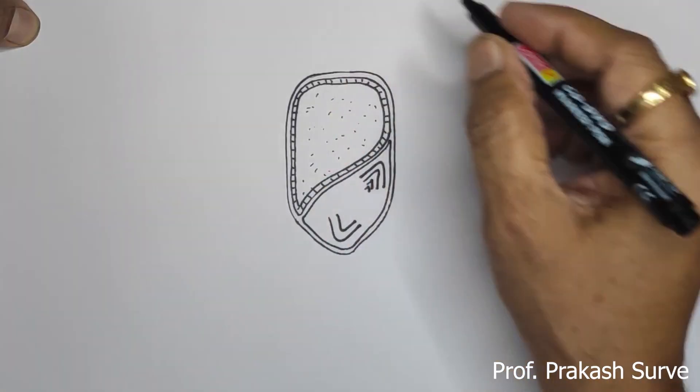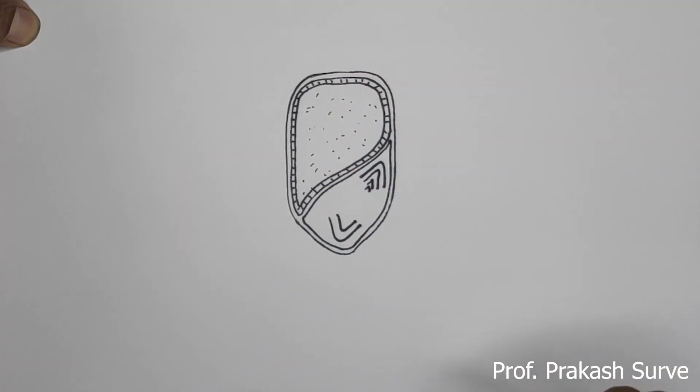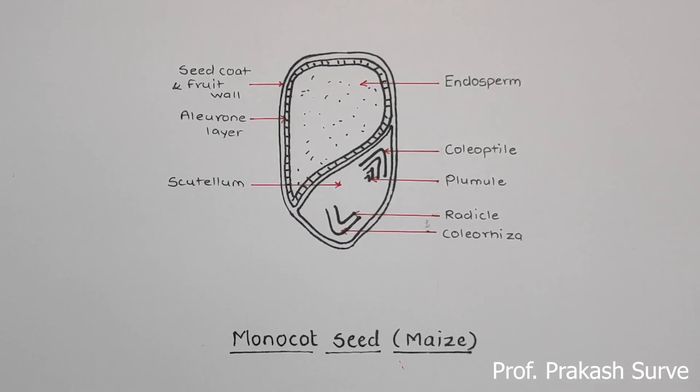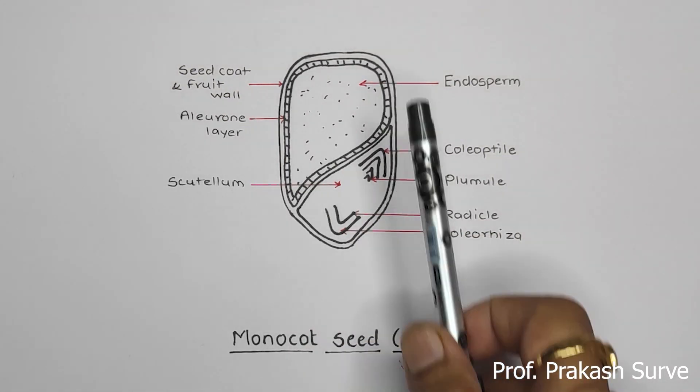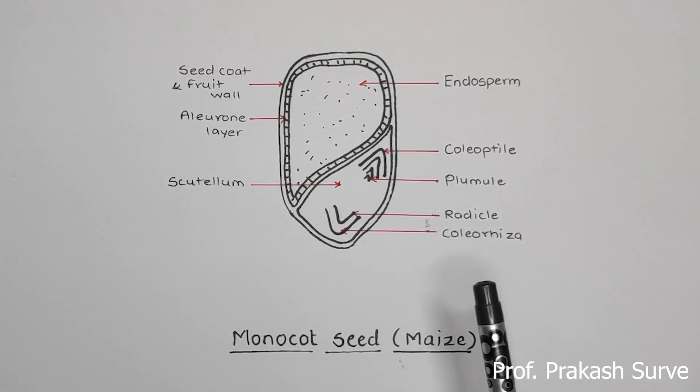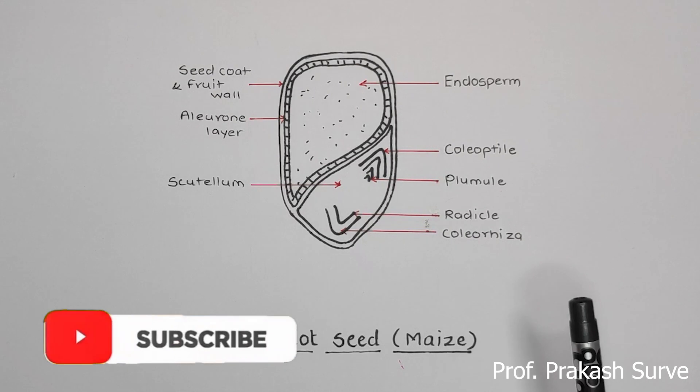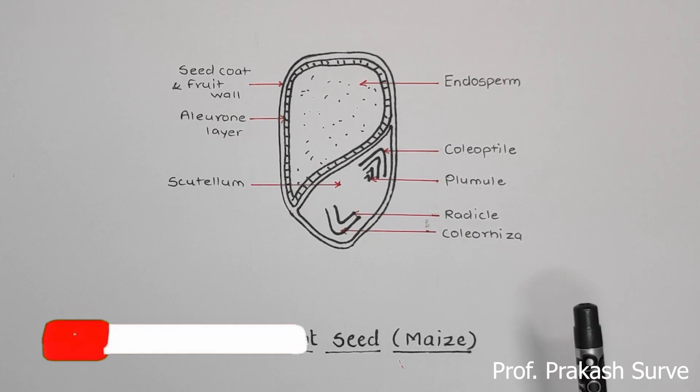So this way we have finished this diagram of the monocot seed example, that is about the maize. So here we have finished this diagram in a few minutes. So like that you have to draw a diagram and label all the parts. This is about the monocot seed maize example, so step by step we have done this.